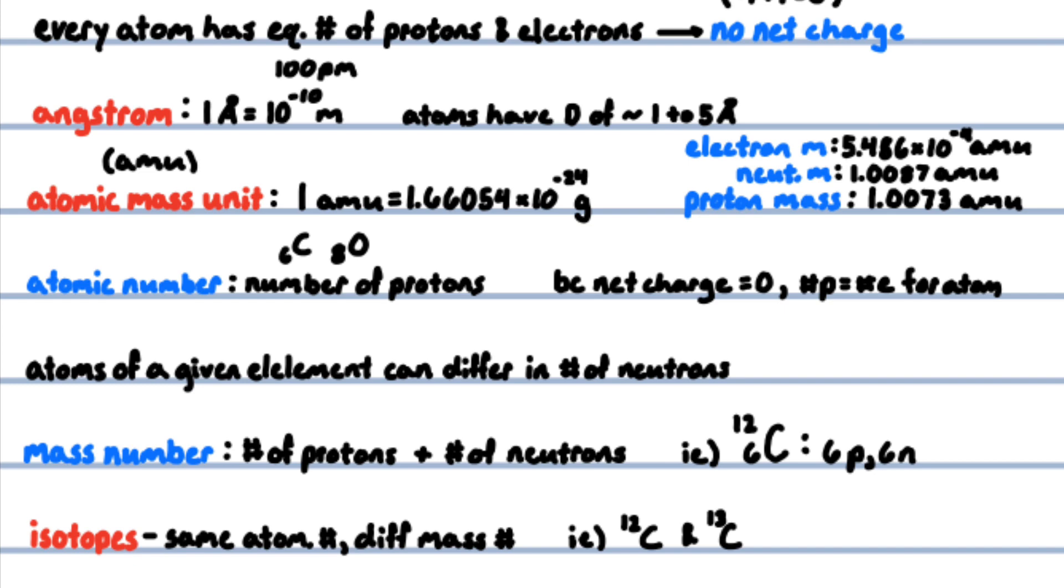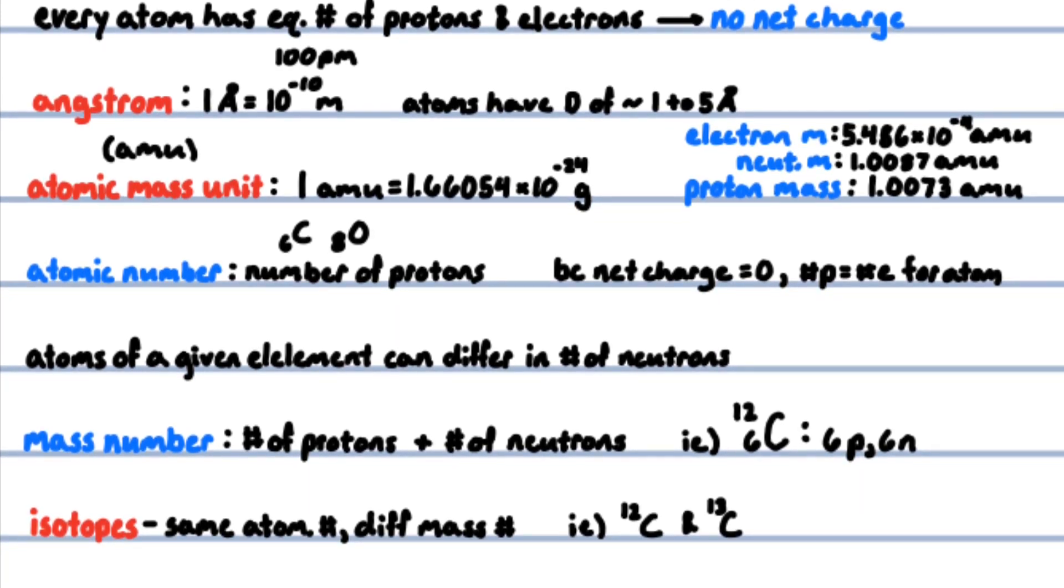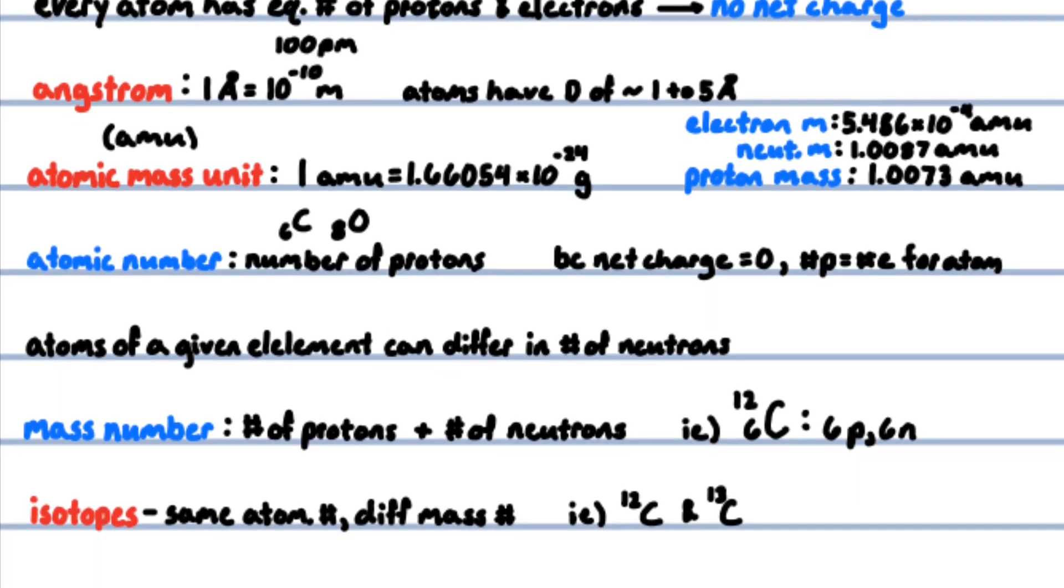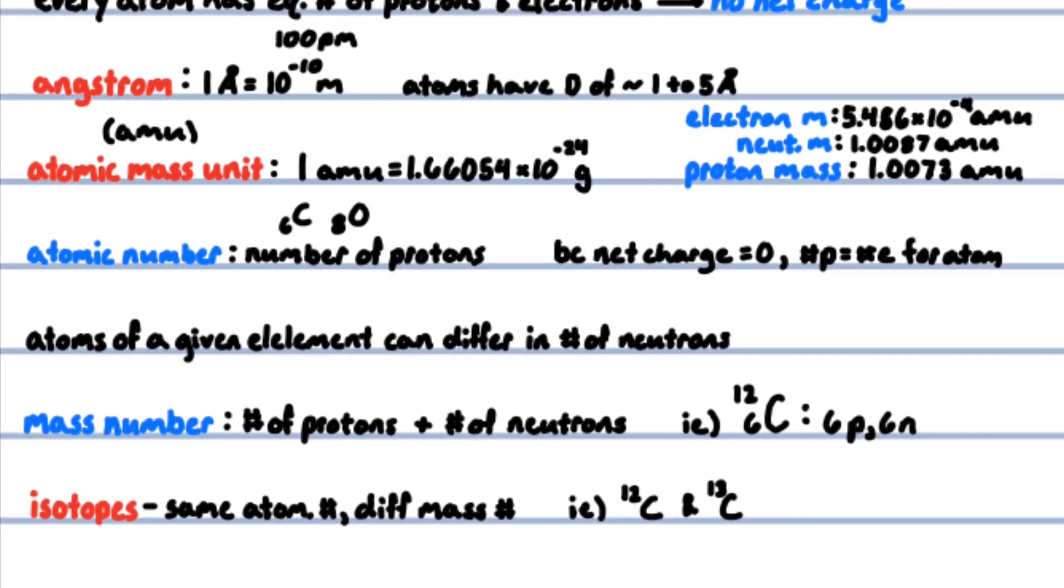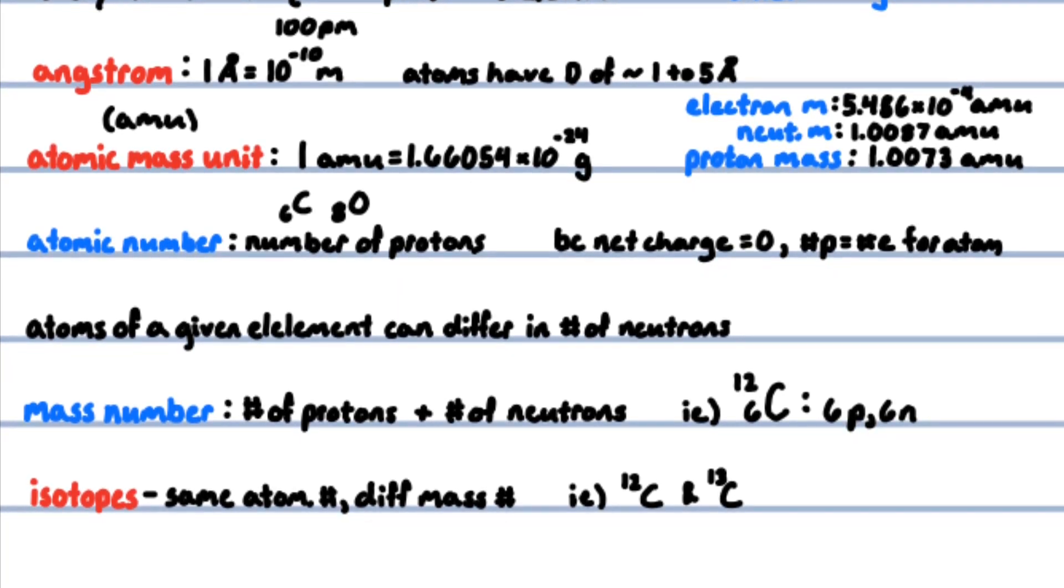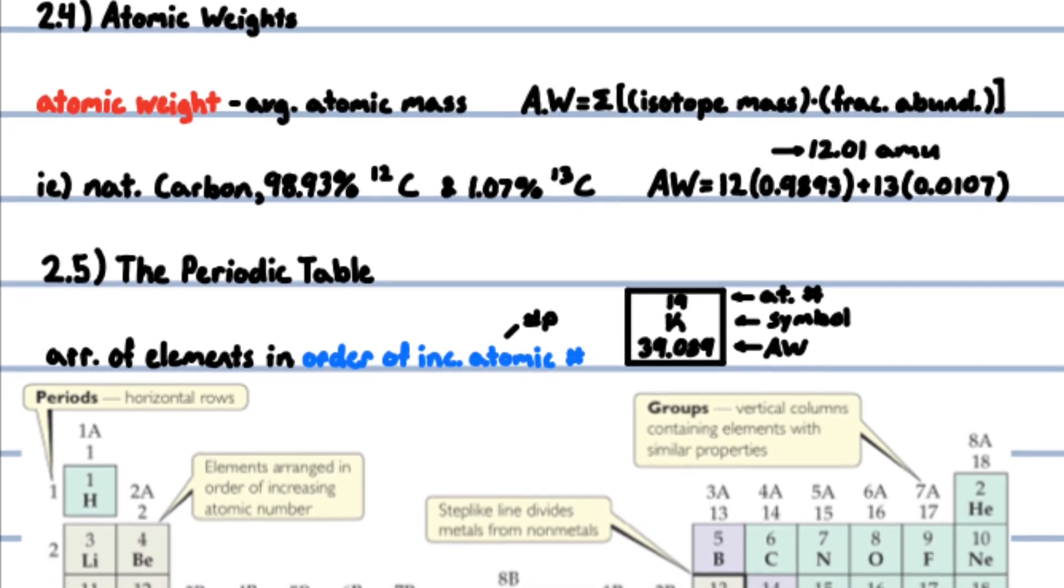The atomic number is indicated by a subscript, while the superscript is called the mass number. The mass number is the number of protons plus neutrons in the atom. For example, carbon-12 has six protons and six neutrons: six plus six equals 12. Atoms with identical atomic numbers but different mass numbers—same number of protons, different number of neutrons—are called isotopes of one another. For example, carbon-12 and carbon-13 are isotopes of each other.